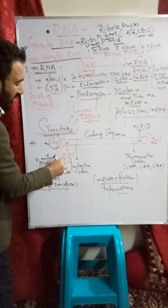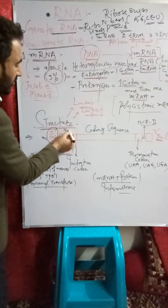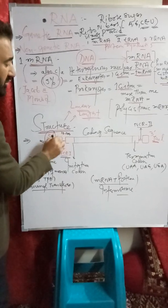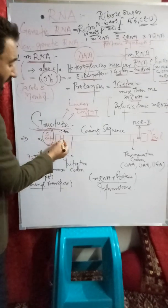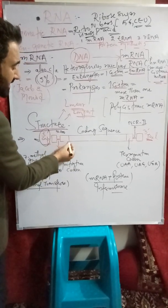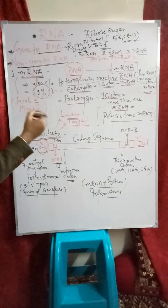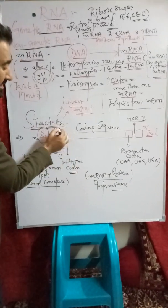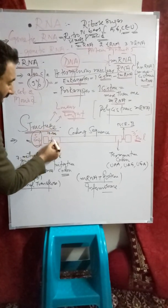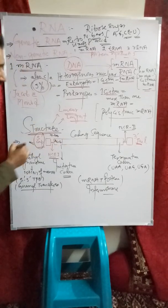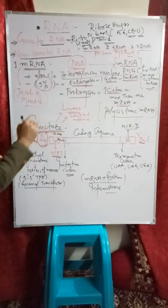The cap is followed by non-coding region one, which is composed of 10 to 100 bases and does not code for any protein or amino acid. After non-coding region one, there is the initiation codon — the codon that starts protein synthesis — which is usually AUG, but GUG can also act as an initiation codon during protein synthesis.